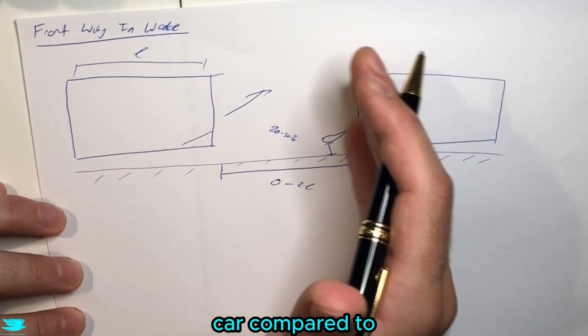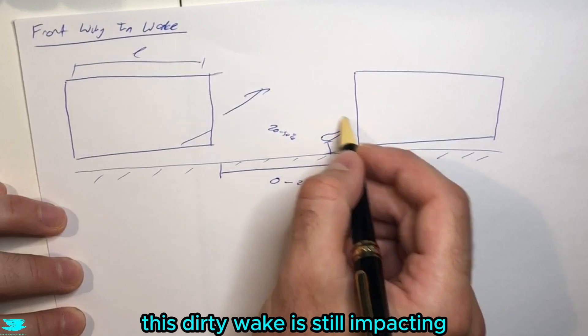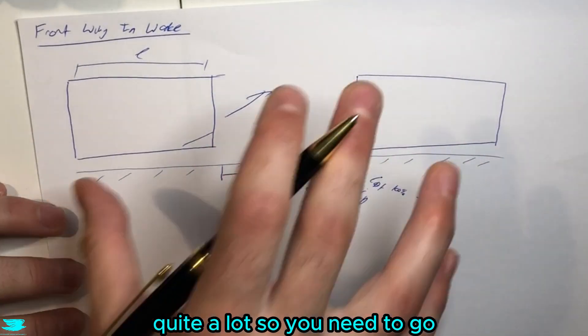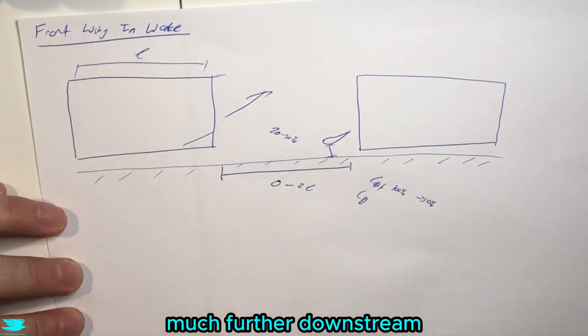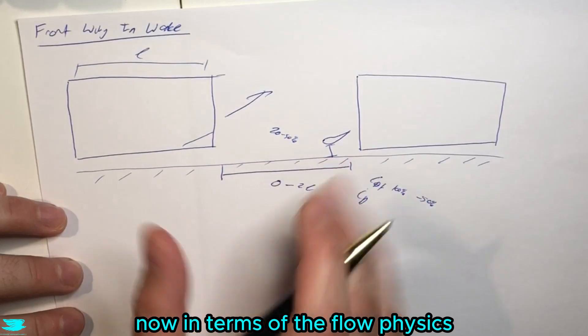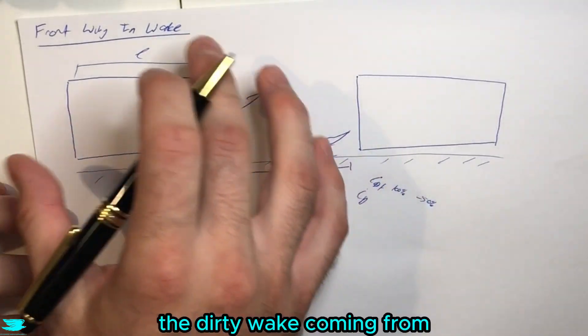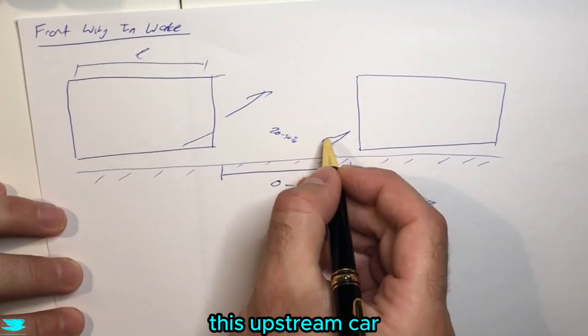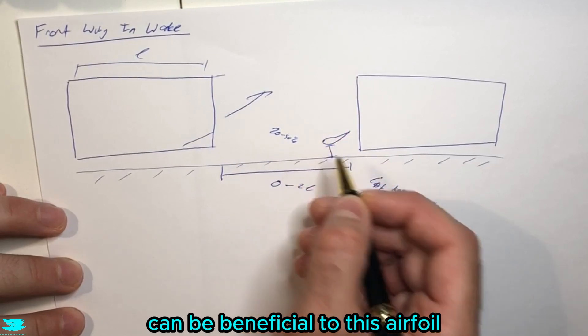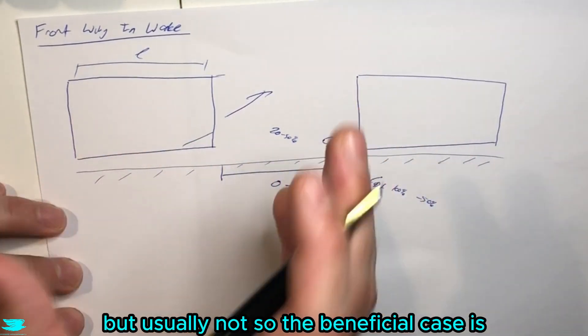If you're very close to the car compared to two car lengths downstream, this dirty wake is still impacting your front wing quite a lot, so you need to go much further downstream. Now in terms of the flow physics, generally speaking the dirty wake coming from this upstream car can be beneficial to this airfoil under certain circumstances, but usually not.